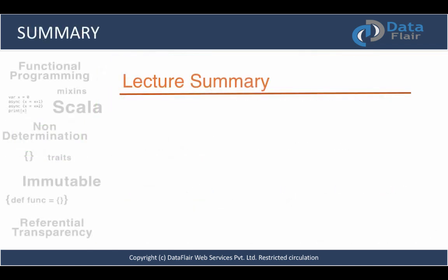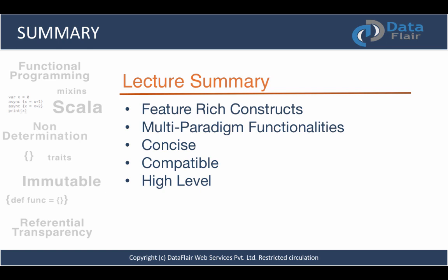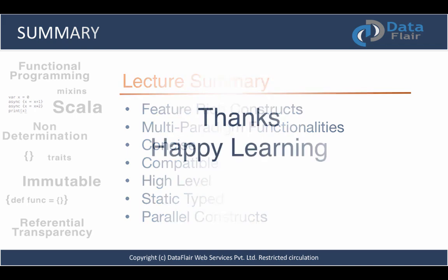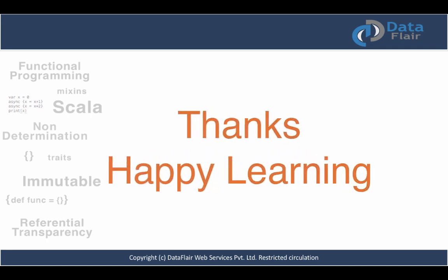So let's summarize what we have learned in this lecture. We started with the reasons that make Scala a cool language — reasons to choose Scala for its feature-rich constructs and multi-paradigm functionalities. Very few languages have such power and robustness, and Scala is one of them, which is the reason for its popularity. We discussed all those reasons such as compatibility, being high level, statically typed, and more. In our next video lecture we will talk about Scala's features and then take a look at frameworks written in Scala. Happy learning — thank you, bye bye.